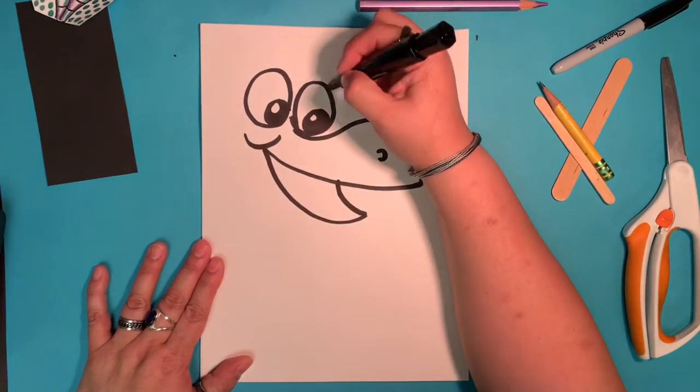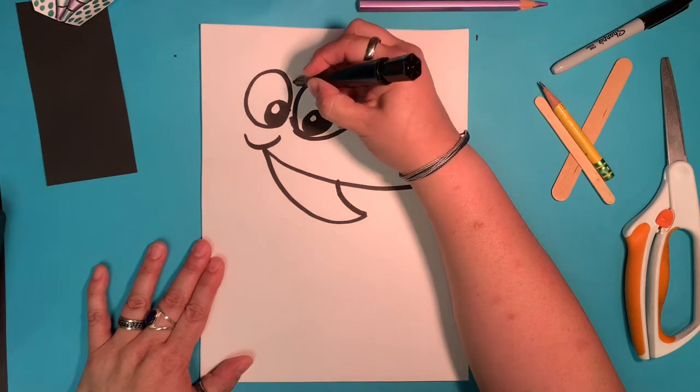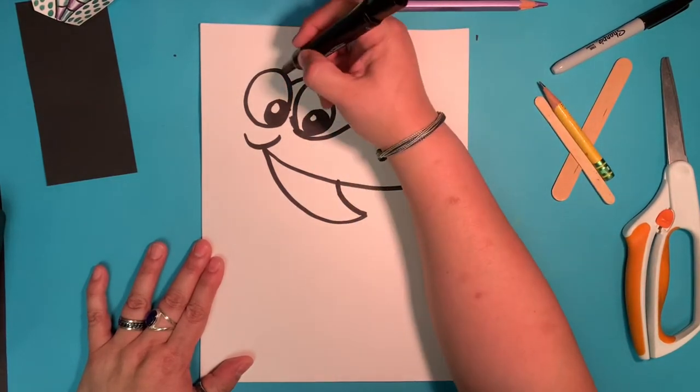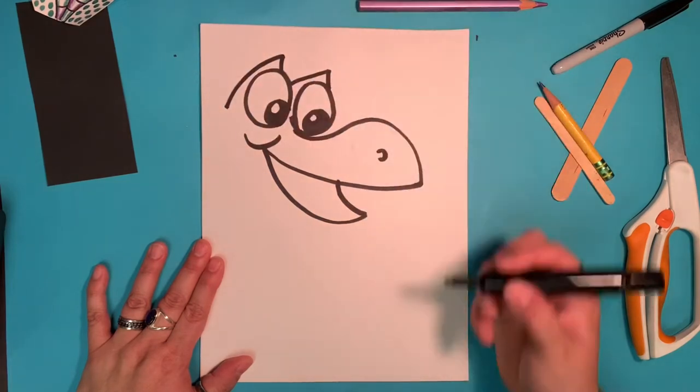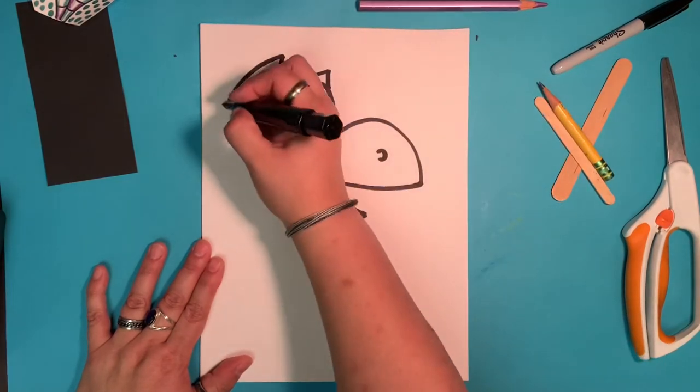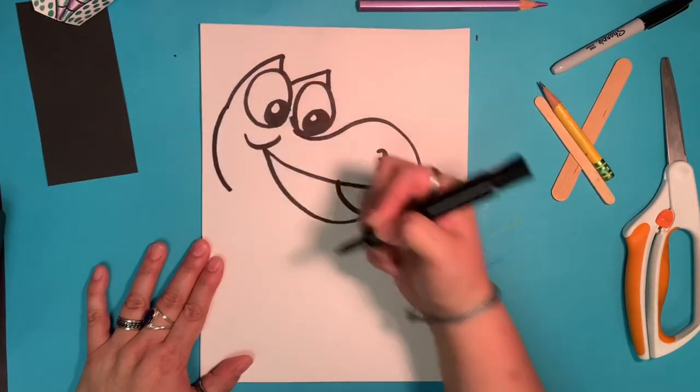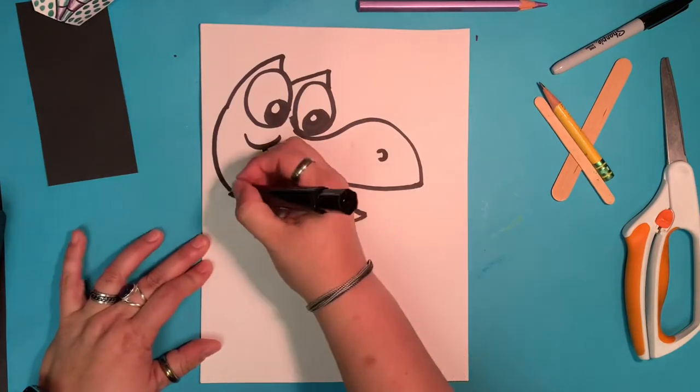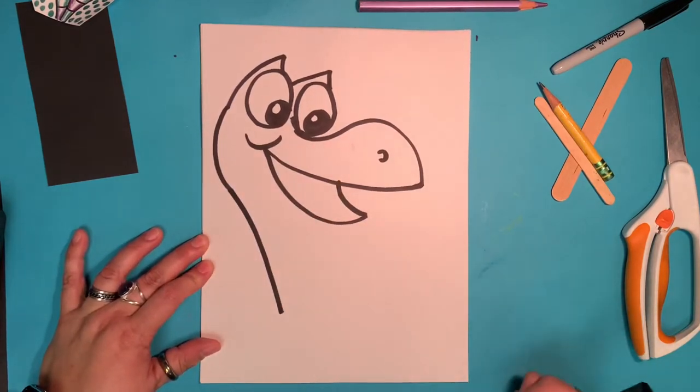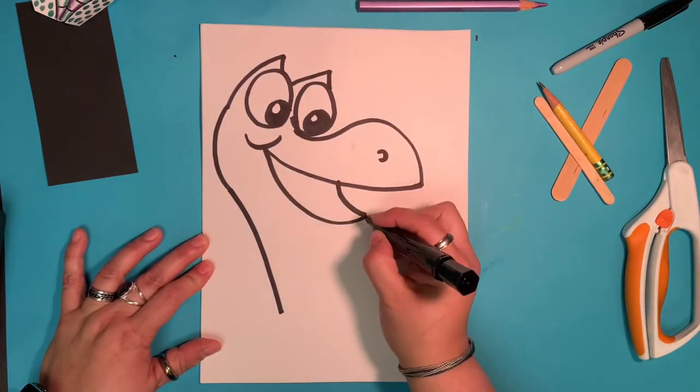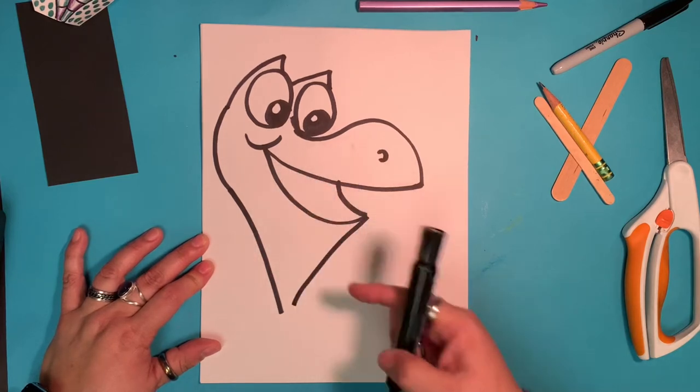All right, we're going to draw a letter V line up and then down. And then another one up and then down. And we're going to curve right here. And then bring it down. And then bring this side down so you get like that triangle shape.